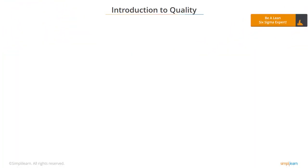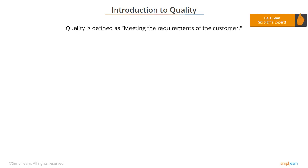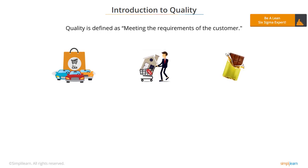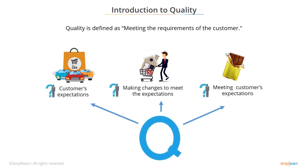Let's begin this lesson by defining quality. Quality is defined as meeting the requirements of the customer. What features do you look for when purchasing a car? What facilities do you want in your house or apartment when buying one? What do you expect from a premium chocolate candy bar? Answers to these questions will tell what quality means to you for each of these items.